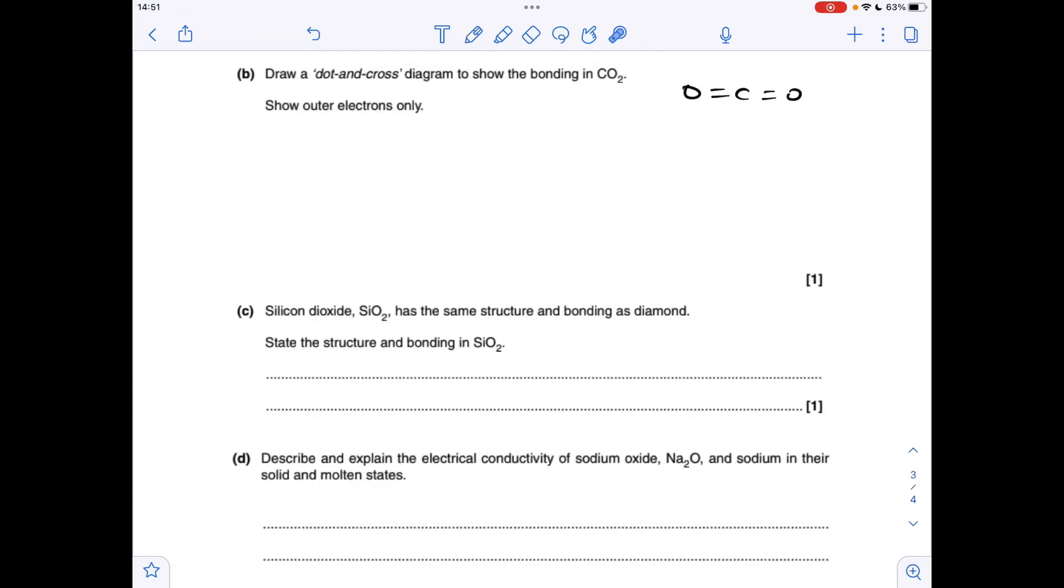Next part of the question, we've got to draw the dot and cross diagram to show the bonding in CO2. So I've just drawn up a shape diagram there just to remind you that between the carbon and the oxygen, we've got double covalent bonds. I've gone for crosses for the electrons for carbon. So carbon's in group 4, so we've got four valence electrons, two in each of the double bonds.